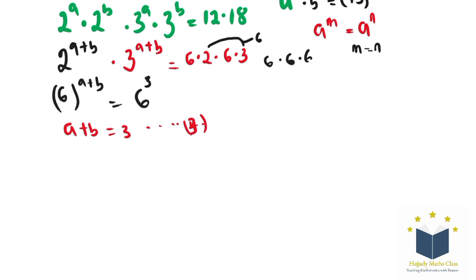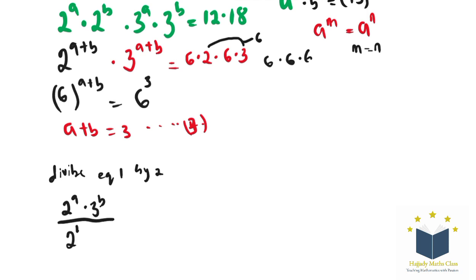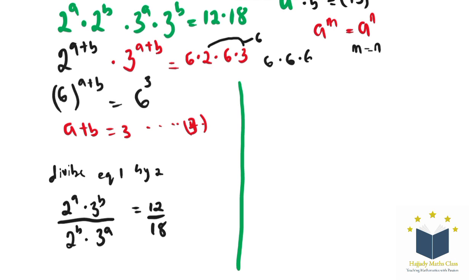Also, the next step for us to do is to divide equation 1 by equation 2. Equation 1 is 2 to the power of A multiplied by 3 to the power of A equals 12. So for us to proceed with this, we have 2 to the power of A over 2 to the power of B, multiplied by 3 to the power of A over 3 to the power of B, equals 12 over 18, which simplifies to 2 over 3. That is, dividing 12 by 6 gives 2, and dividing 18 by 6 gives 3.